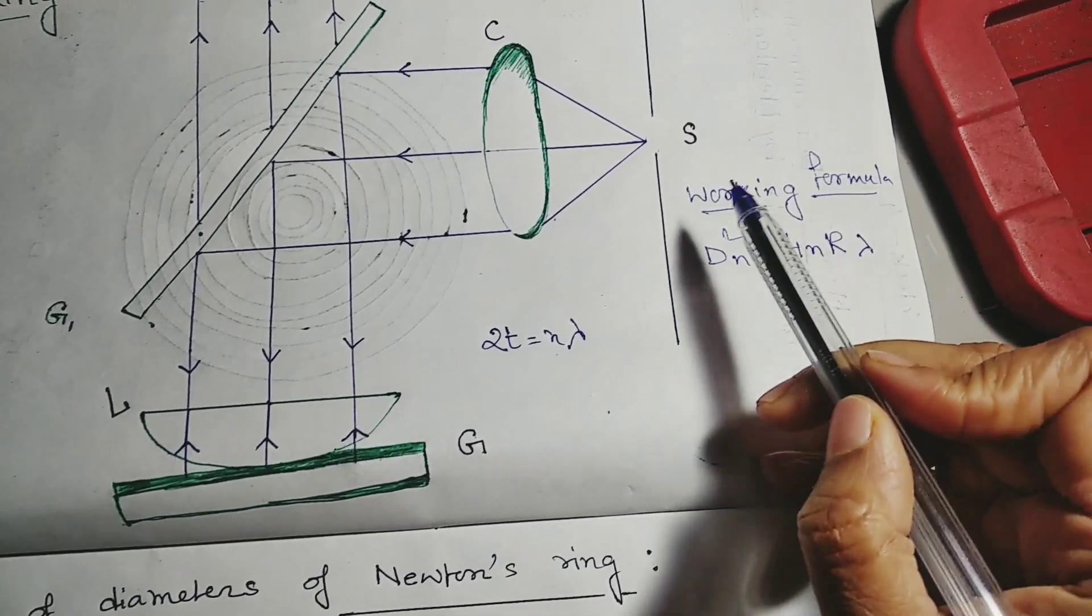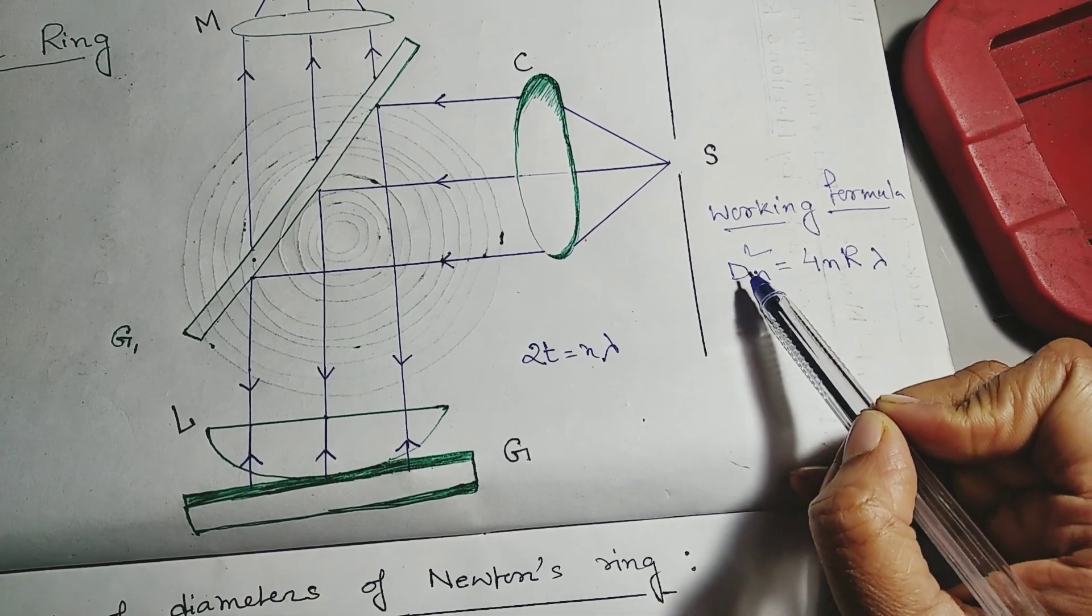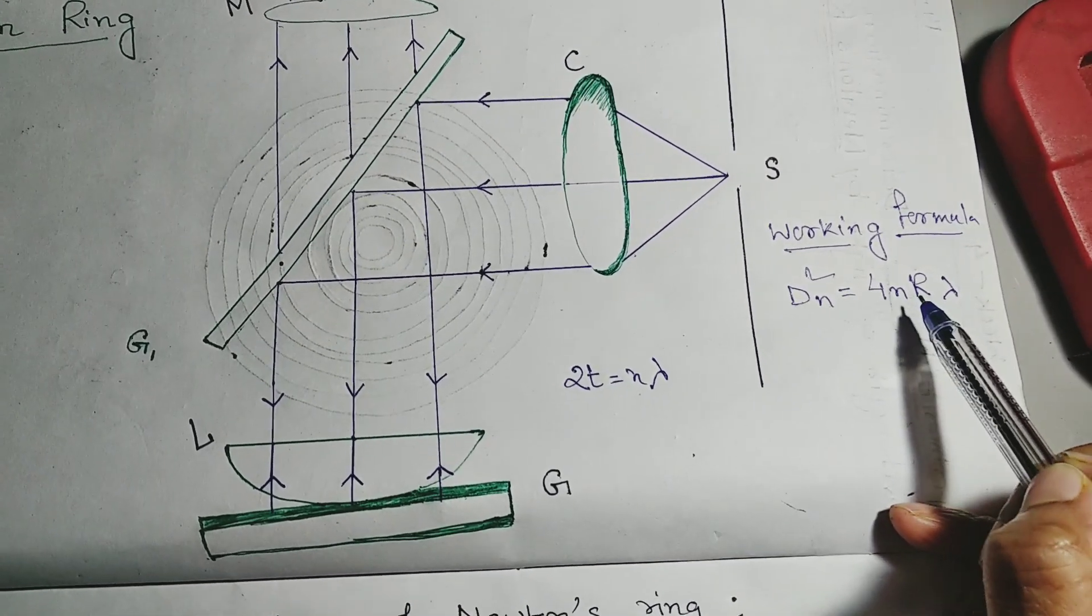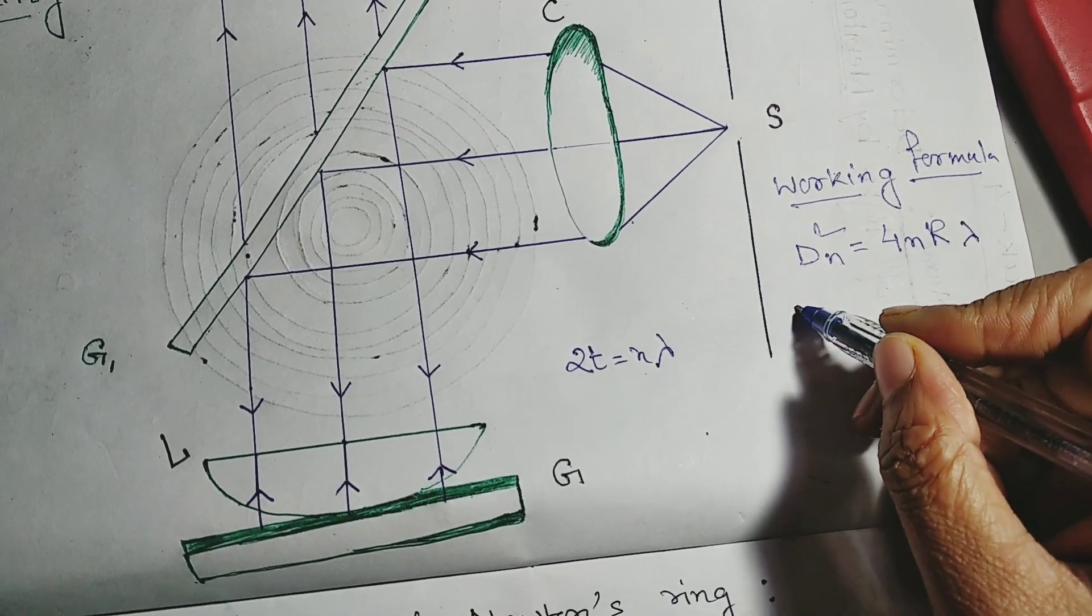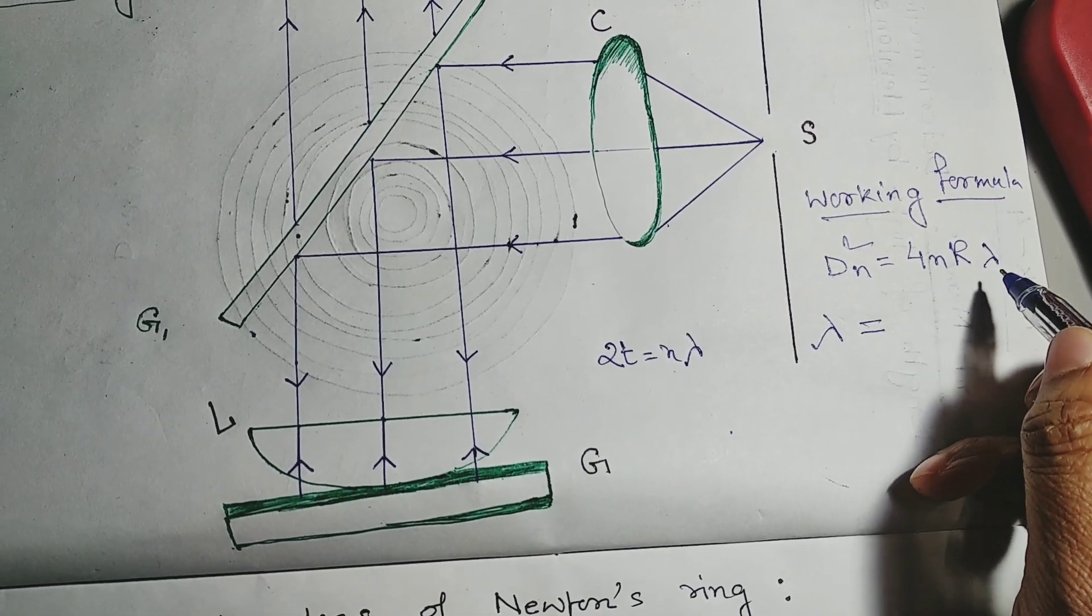Lastly we get that working formula is diameter n, dn square. D for diameter, dn square is equal to 4 into small n or lambda. Here from we have to find out the lambda. Wavelength of light, lambda.